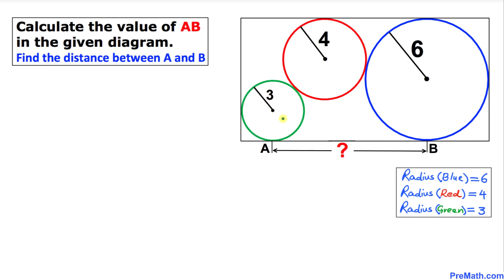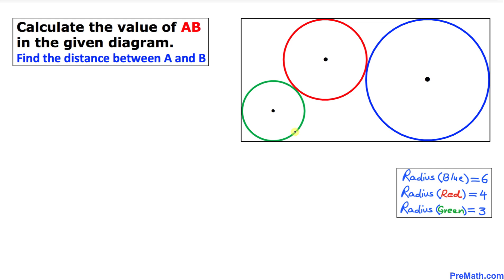Welcome to PreMath. In this video tutorial we are going to calculate the distance between the points A and B as you can see in this given diagram. In this given diagram we have been given three circles. The blue circle has a radius 6, the red one has radius 4 and the green circle has a radius 3.